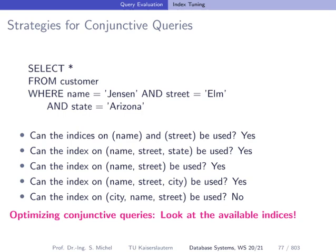So the first four index options are applicable and the last one is not. It's important to understand why this is the case.